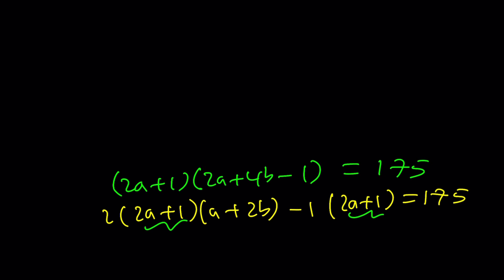Guess what? We're looking at factors of 175. And 2a + 1 is actually very easy to check, so we'll start with that. For example, if this is equal to 1, that means a is equal to 0. If a is 0, then this is 0. Then 4b - 1 is supposed to be 175.